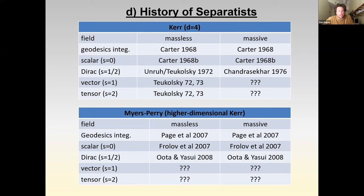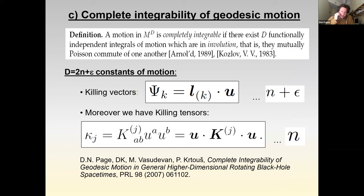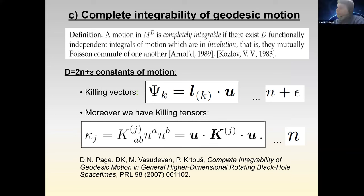An audience member asks: for ordinary isometry groups, solutions of the wave equation transform in representations of that group. Is there an analogous notion for dynamical symmetries — do solutions transform in representations of some other algebraic object? The speaker's first reaction is probably no, and notes this doesn't appear to have been studied, suggesting it could be an interesting research problem.